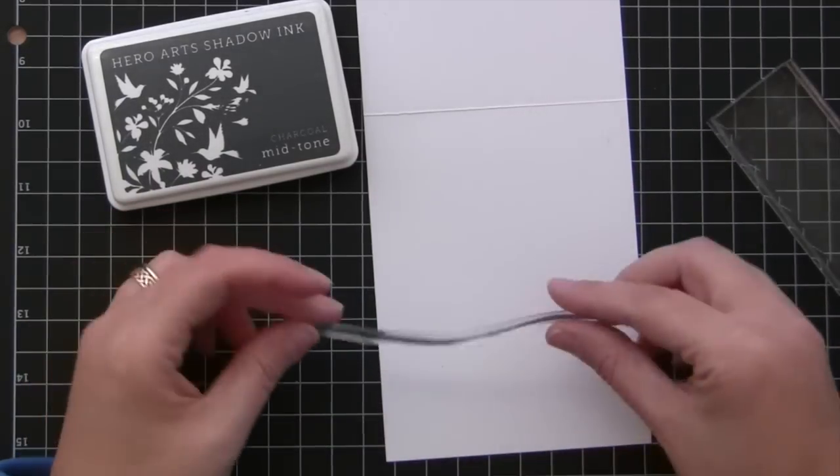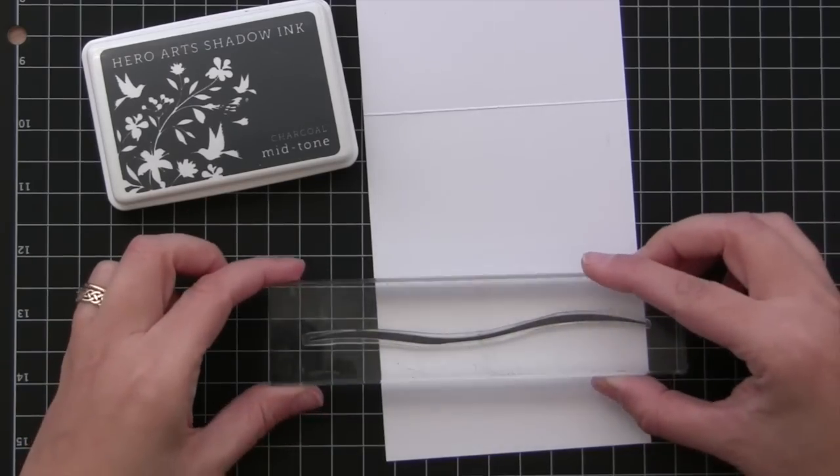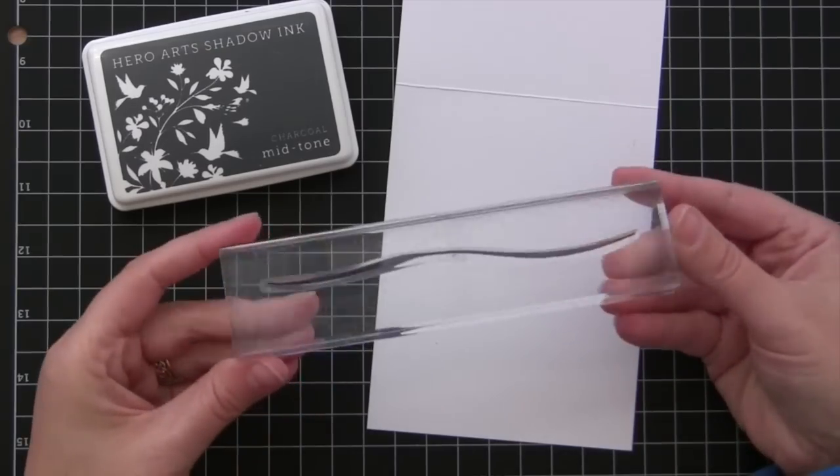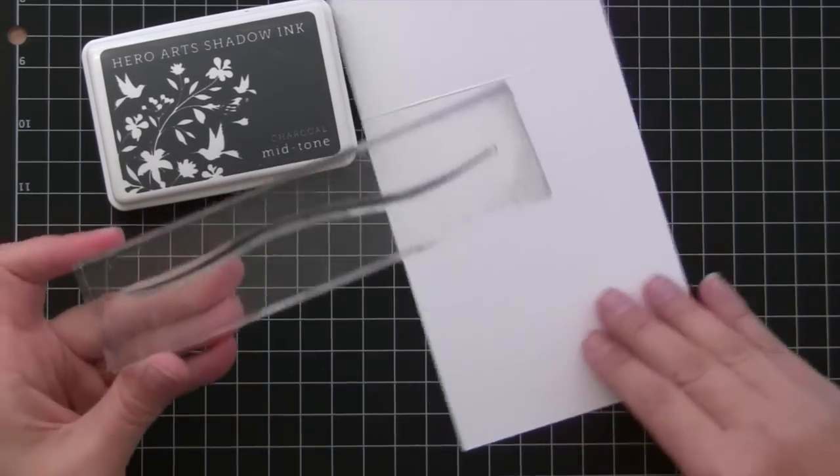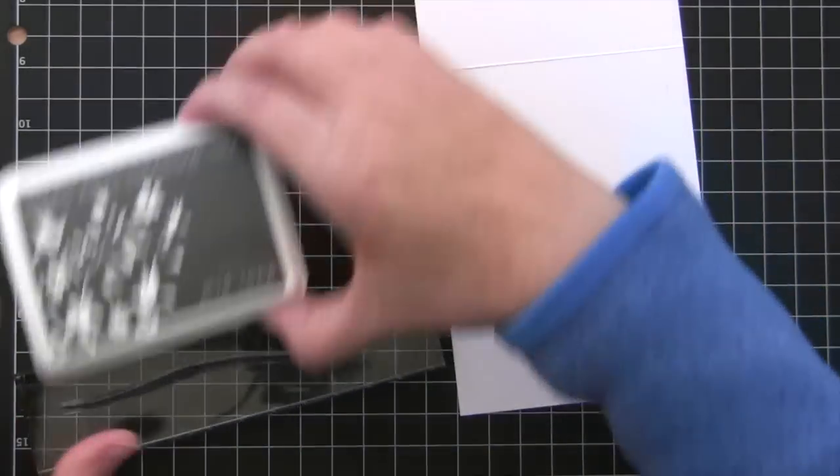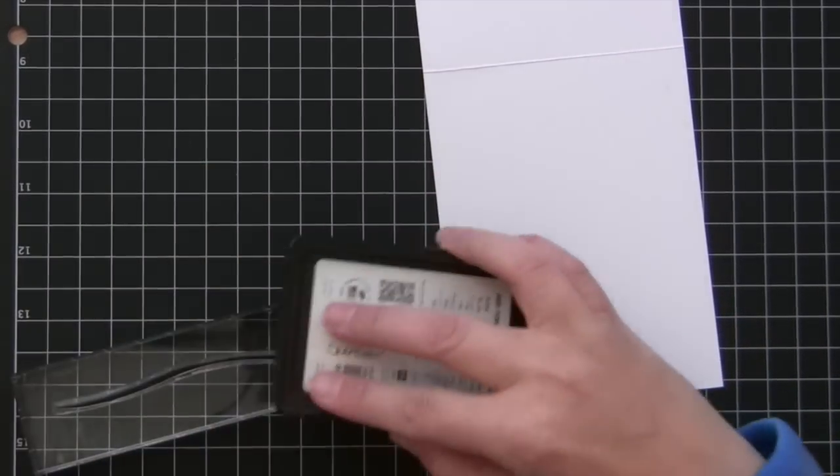But if you want the stamp to stay the same shape as how it was manufactured, you place it on your table and then mount your acrylic block to it instead of putting it on the stamp with your hands. This is really great if you want to keep a message straight. Then you just go ahead and ink it up and stamp away.